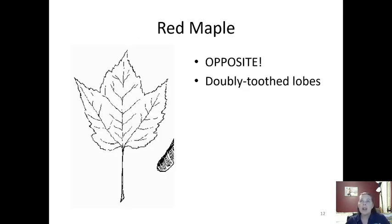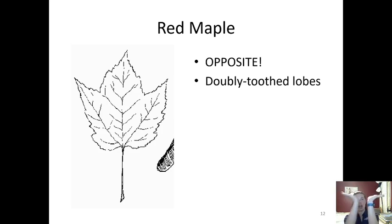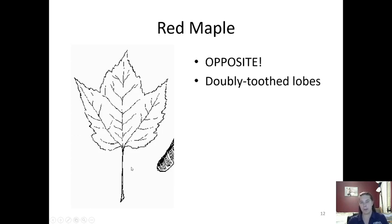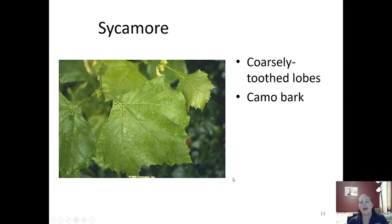Next we have red maple. Sometimes people get too focused on the leaf and need to take a step back. Red maple has opposite leaves, meaning if you have a leaf here you're going to have a leaf right across from it — it's opposite. Remember the MAD mnemonic: Maple, Ash, Dogwood. Red maple also has doubly toothed lobes, where each tooth has a little secondary tooth on it. The stems of red maple are usually red in color, as are the younger parts of the tree. Red maples turn vibrant bright colors in the fall.